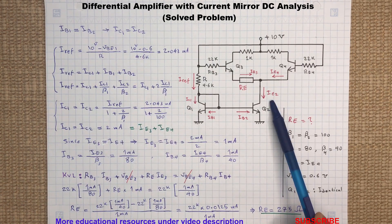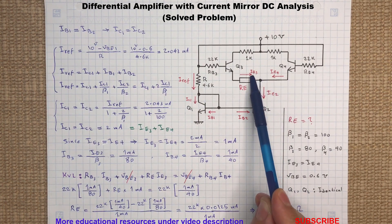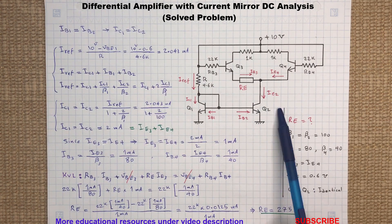Now as we can see here, the current IC2 consists of currents flowing through the emitter of transistors Q3 and Q4. And for this circuit, we would like to have a balanced emitter current.